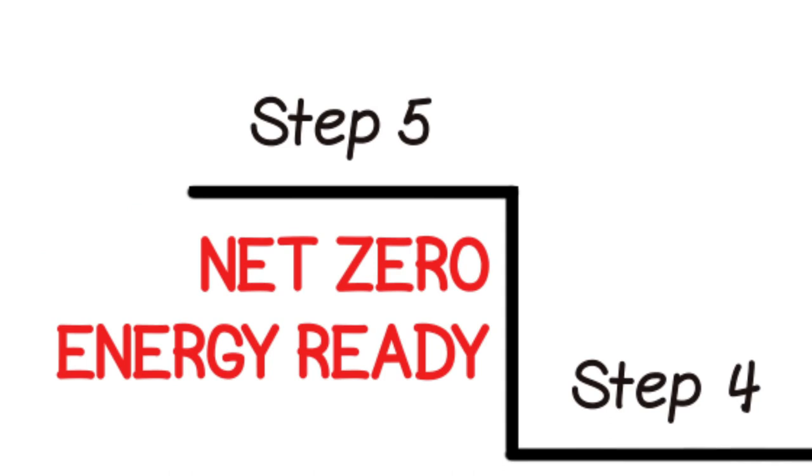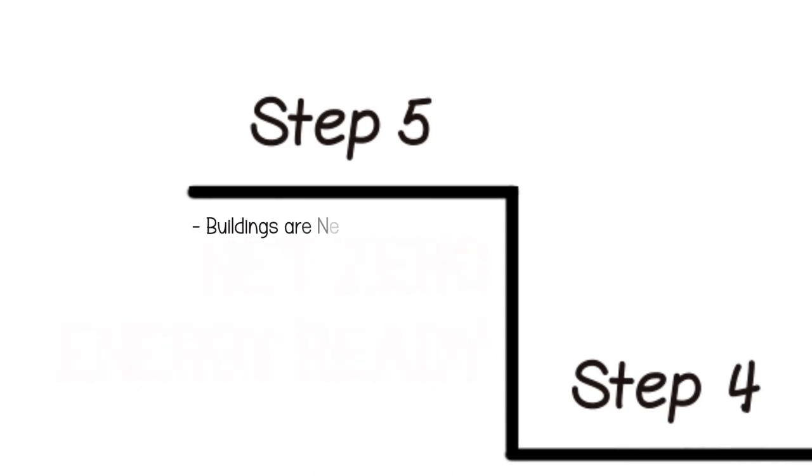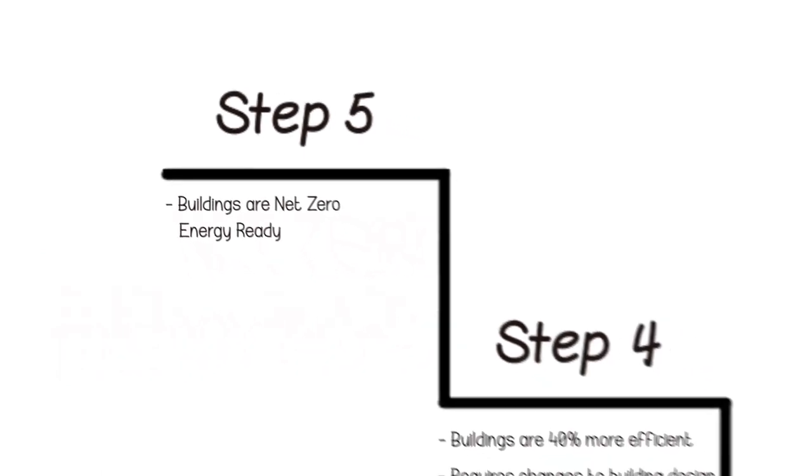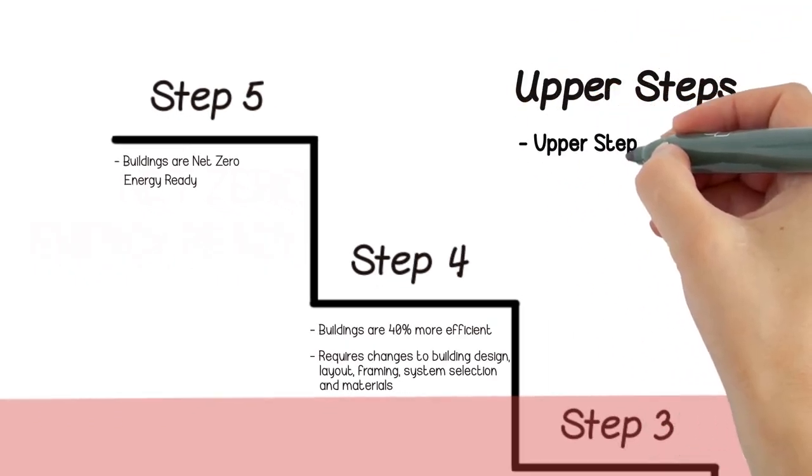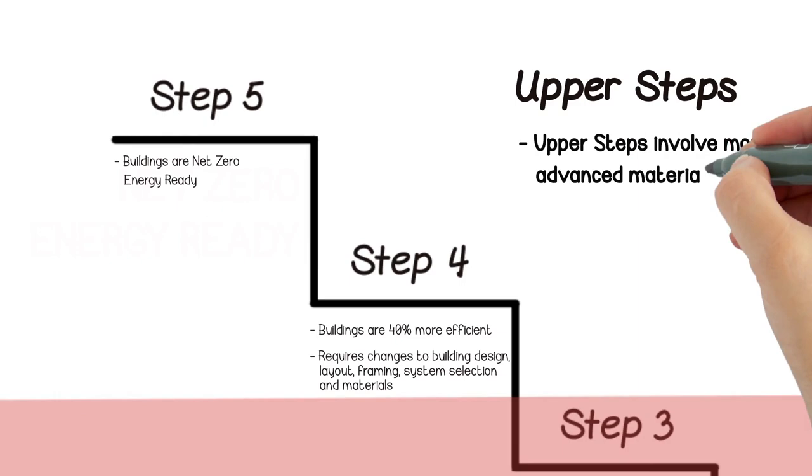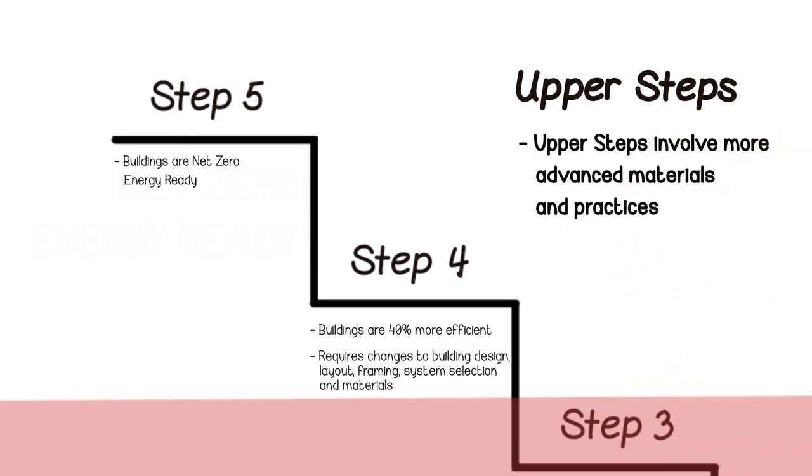Finally, at the top of the staircase is step five. This represents a net-zero energy-ready building, the most energy-efficient building that can be built today. These upper steps may require the use of more advanced building practices and expertise, and energy-efficient building components that are not yet widely available.